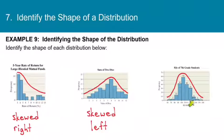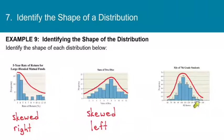Don't get into a forced habit of counting the bars — I just used that to give you a feel for what's going on. Because the fifth bar is so short, I'm going to say that this data is bell-shaped.